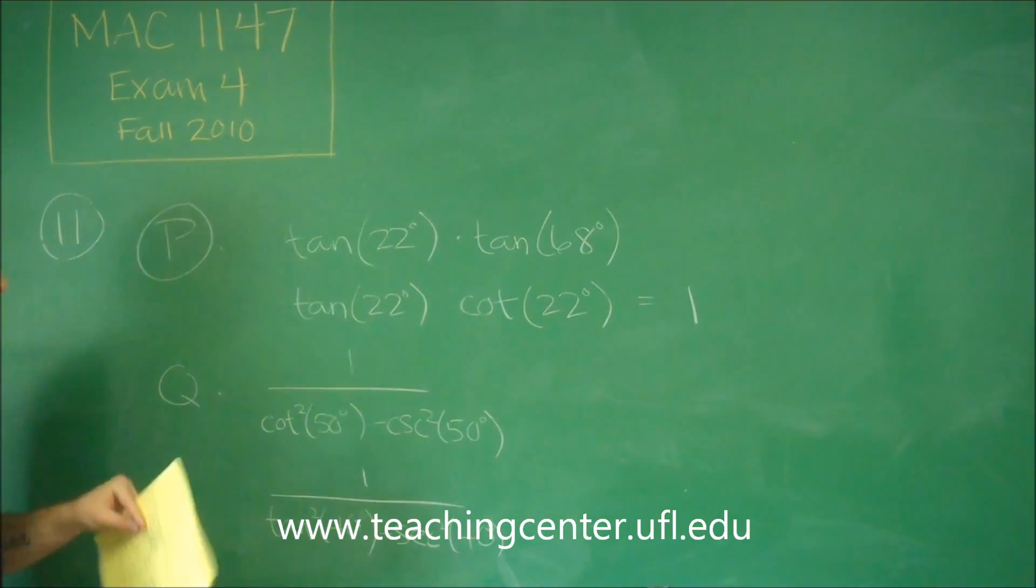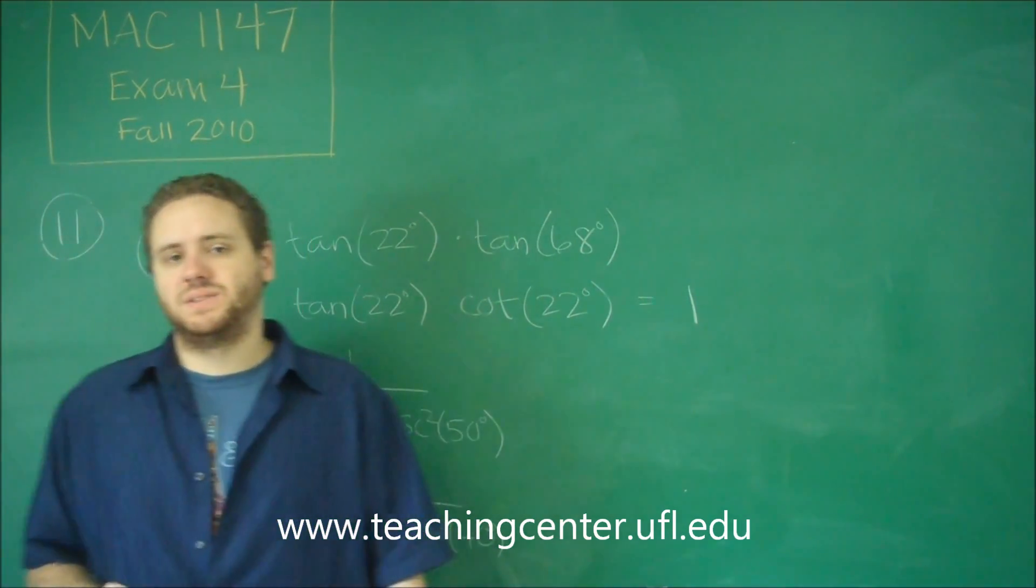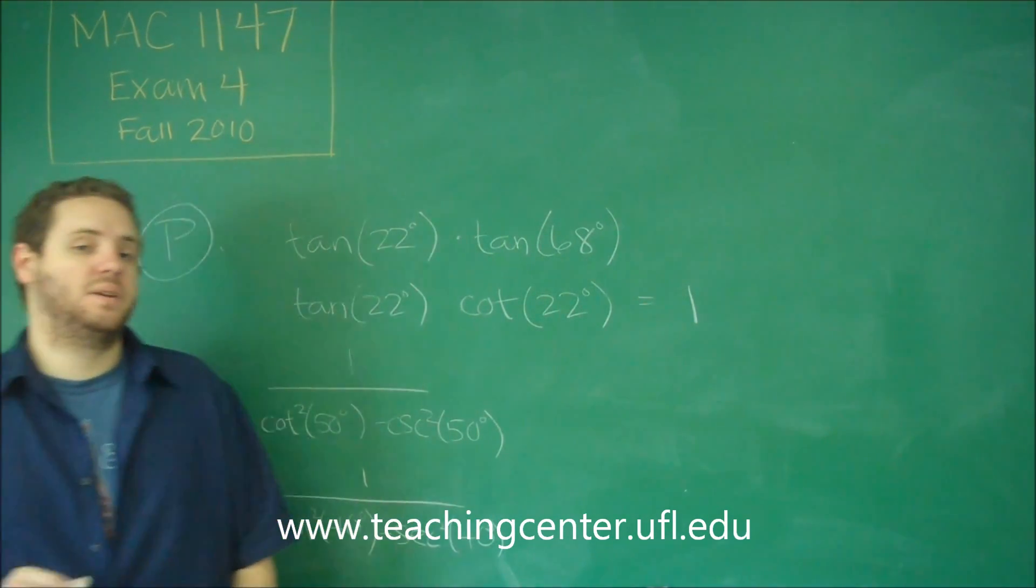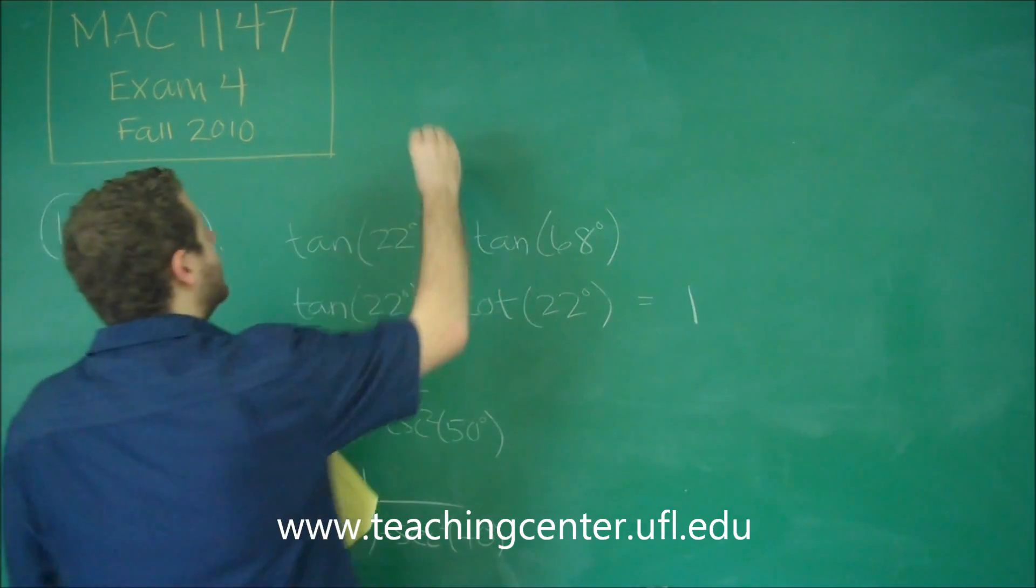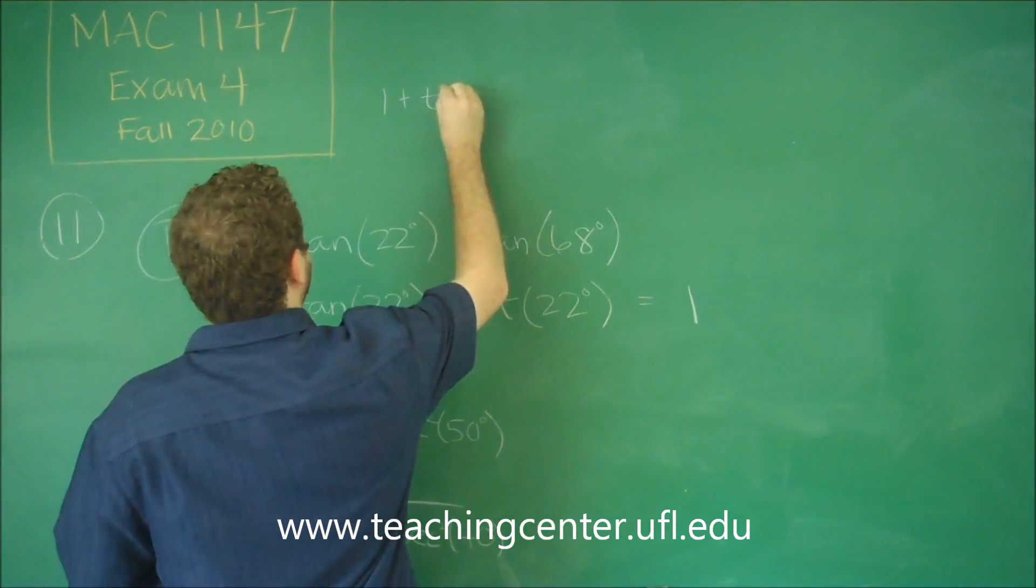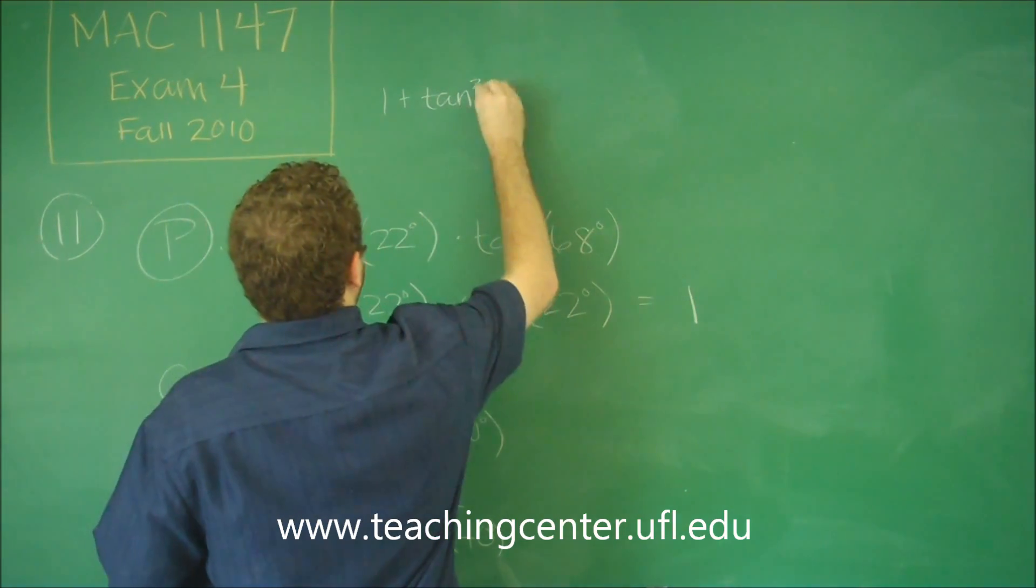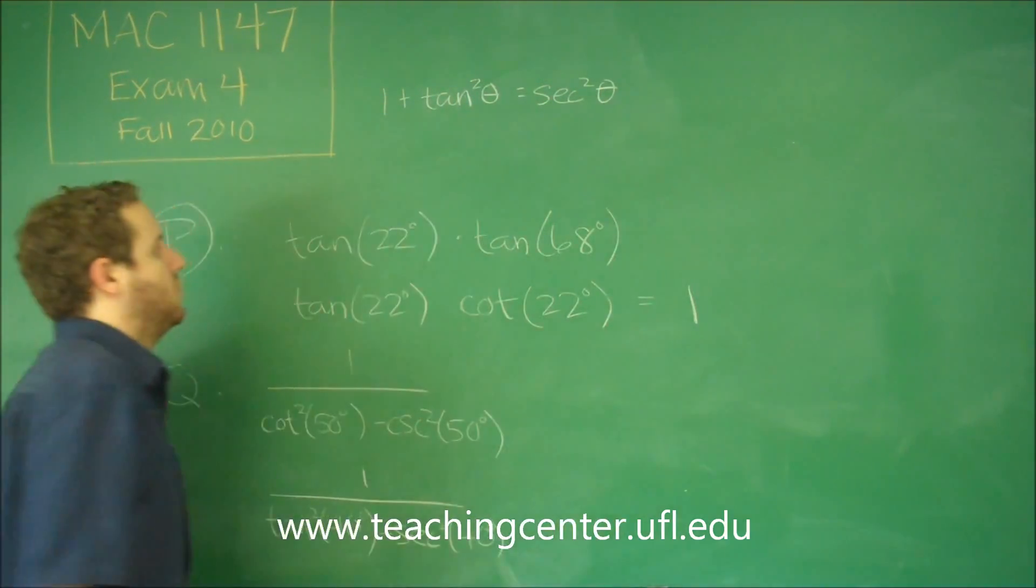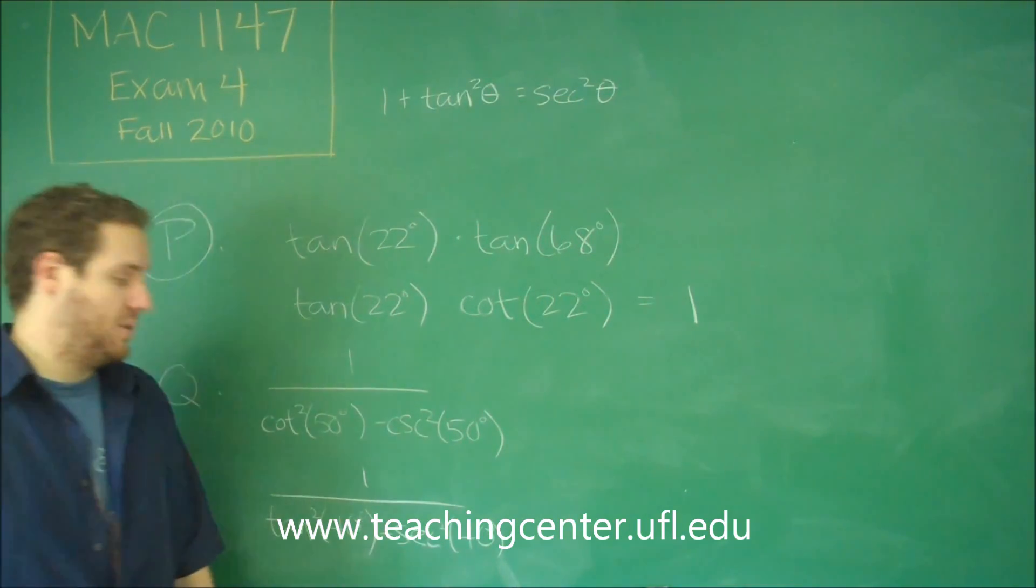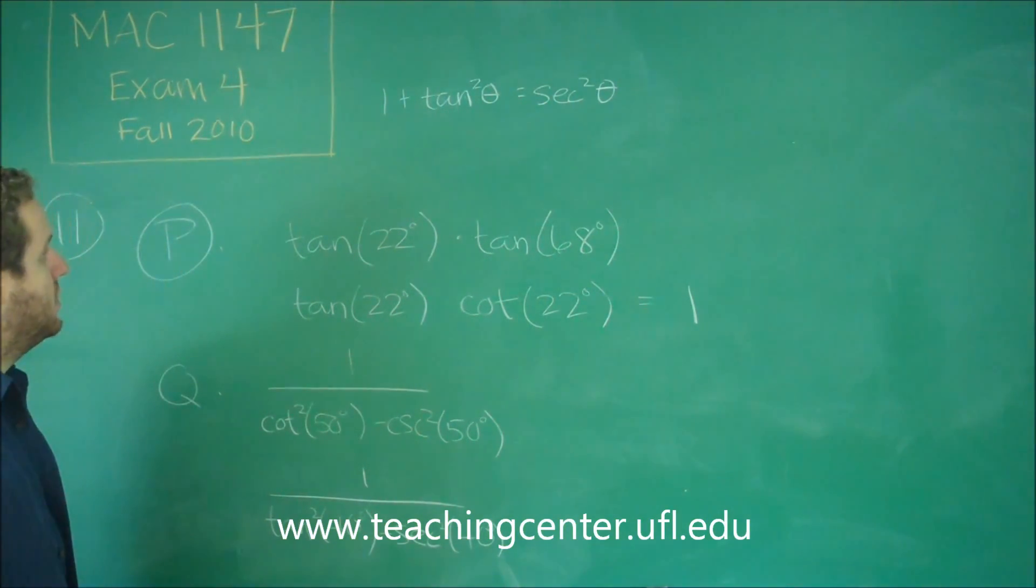So now we need to think about, these are tangent and secant squared of the same angle. This is one of our Pythagorean identities for trig functions. So recall that 1 plus tangent squared theta is always equal to secant squared theta. That's one of your Pythagorean identities that you should know.